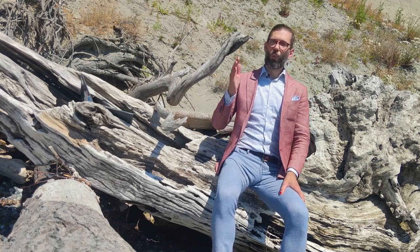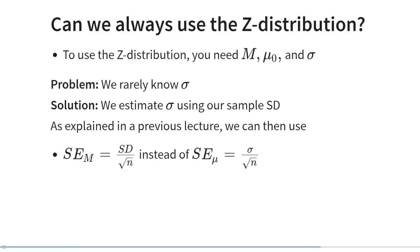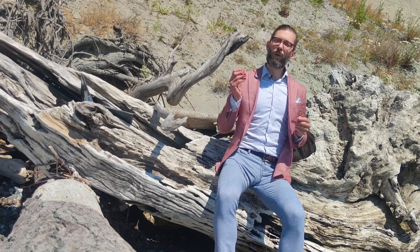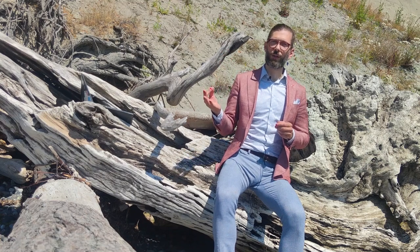Until now I have explained statistical testing based on the z-distribution. Today I'm going to introduce one other probability distribution: Student's t-distribution, or the t-distribution for short. The t-distribution was developed by Gossett at the Guinness factory to solve a specific problem. Gossett wondered whether we can always use the z-distribution. To use the z-distribution, we need to know the population mean mu. For a hypothesis test, this is simply the assumed population mean under the null hypothesis. But we also need to know the population standard deviation, and much of the time we don't know it.